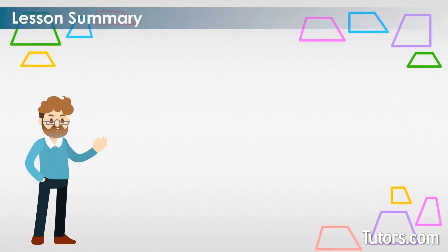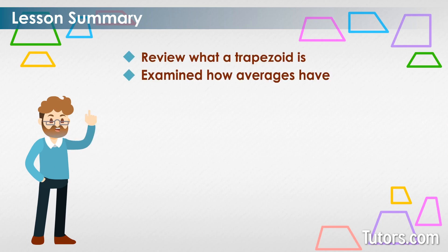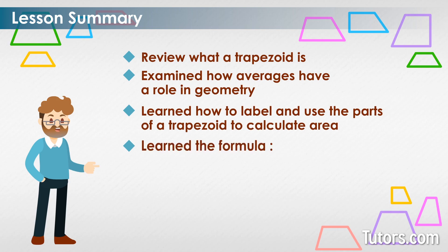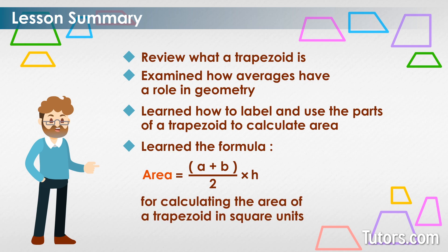In this lesson and video, we have reviewed what a trapezoid is, examined how averages have a role in geometry, learned how to label and use the parts of a trapezoid to calculate area, and learned the formula area equals the sum of A plus B divided by 2 times H for calculating the area of a trapezoid in square units.